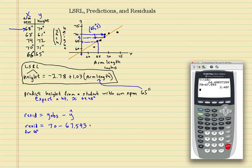67.593. So the residual is 70 minus 67.593, so 2.407. Let's just talk about that for a second. Was your prediction too high or too low? If your prediction came below your observation, your prediction was too low. They're going to ask that sometimes.